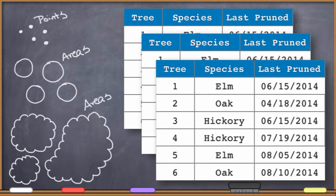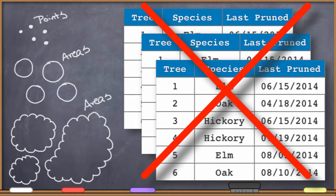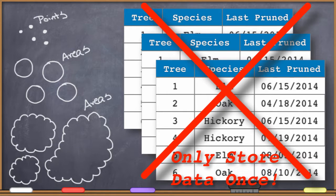Another option would be to record this information about the pruning of the trees in every single file that I've got — each one of these data files could have a field telling me when the tree was pruned. But if I do that, I'm violating a major rule of data management. This is called the golden rule of data management: you should only store data once. You only store data one time in any particular data set or any particular database. Never copy data — ever. That's your golden rule.